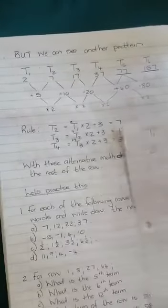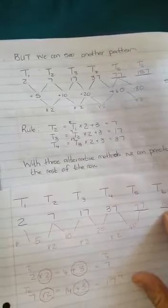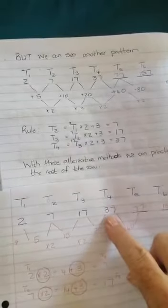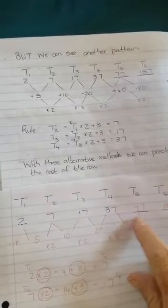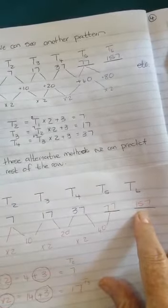And then if I want to calculate the rest of my row, that is 77 and 157. It will then be 37 times 2 plus 3, which gives you 77, times 2 plus 3, that will give you 157.